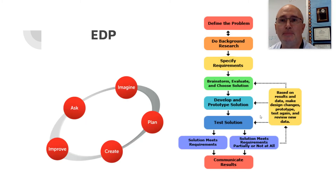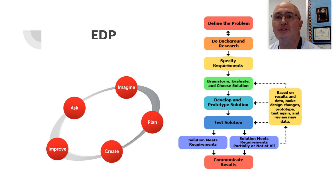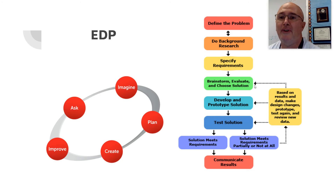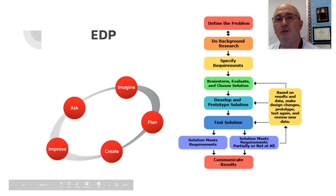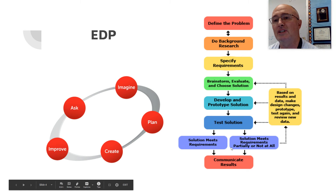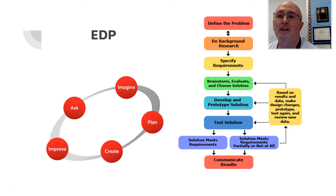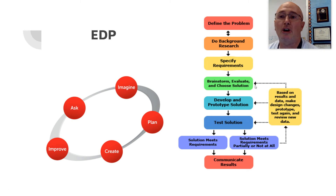Here are the basic steps: define a problem, do background research, brainstorm, evaluate, choose a solution. We develop our prototype and we test it. If it works, great — we communicate our results. If it doesn't, we come back and restart from any one of these places.